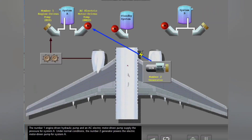The number one engine driven hydraulic pump and an AC electric motor driven pump supply the pressure for System A. Under normal conditions, the number two generator powers the electric motor driven pump for System A.